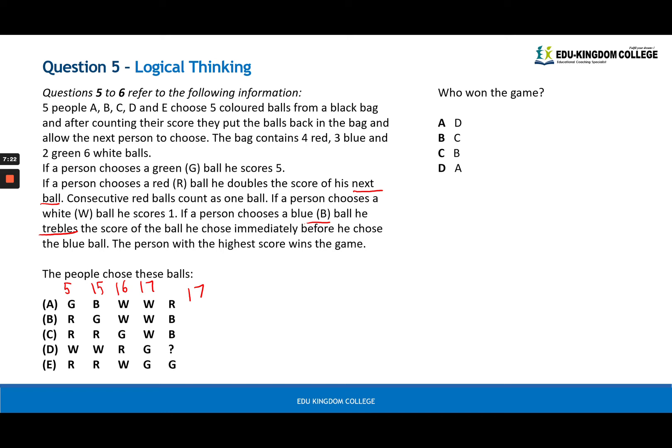For B. If a person chooses red ball, he doubles the score of his next ball. So green would be five. The red's going to act on the green. So the red is doubling green. Green is five. So with these two combinations, we'll get 10. Now white is one. So we have 11, 12. And we know that blue will treble the score of the ball he immediately chose before. So here, the white is one. So we treble it. We get three. And we add it on. We get 15.